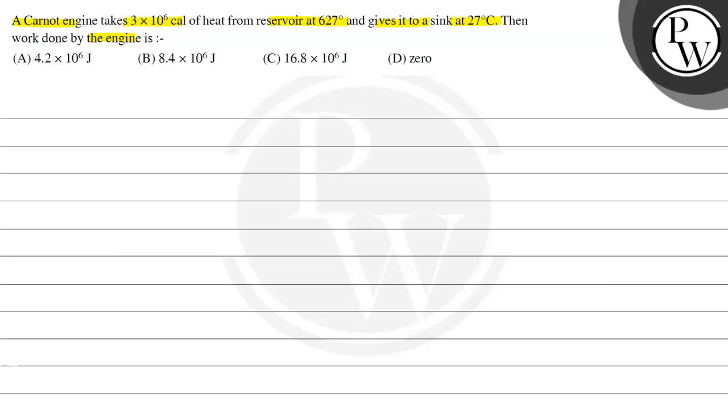The options are: 4.2 × 10^6 joules, 8.4 × 10^6 joules, 16.8 × 10^6 joules, or zero. The key concept for this question is the Carnot heat engine.